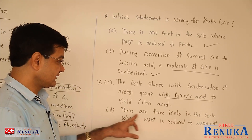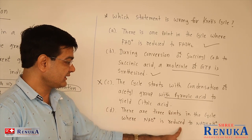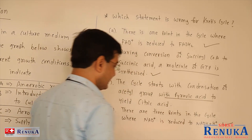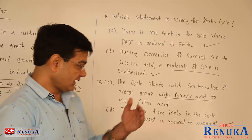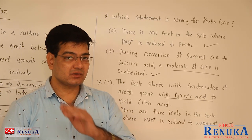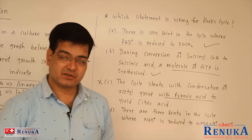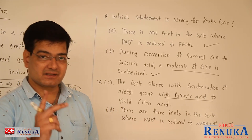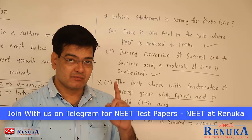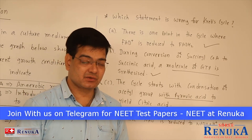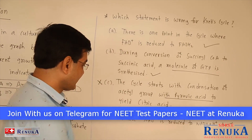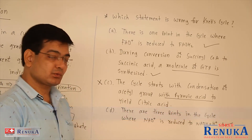Option D states there are 3 points in the cycle where NAD is reduced to NADH+H+. This is true: when isocitric acid converts to oxaloacetic acid, 1 NADH2 is synthesized; when alpha-ketoglutaric acid converts to succinic acid, 2 NADH2 are synthesized; and at oxaloacetic acid formation again, 1 NADH2 is synthesized — giving 3 NADH2 in the matrix of mitochondria. Therefore option D is a true statement, confirming option C (pyruvic acid) is the wrong statement.